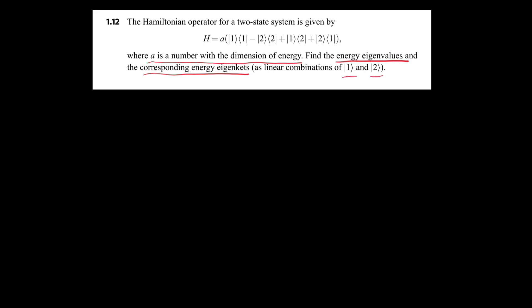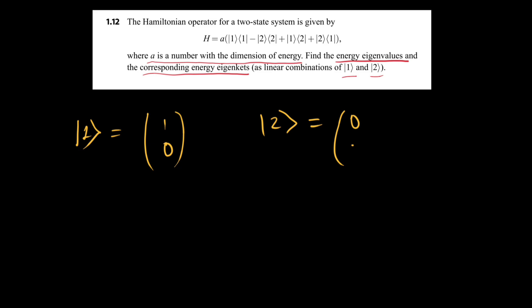To proceed, since it's a two-state system, we'll represent |1⟩ as the column vector (1, 0) and |2⟩ as (0, 1). We can then calculate the corresponding matrices for each outer product term.